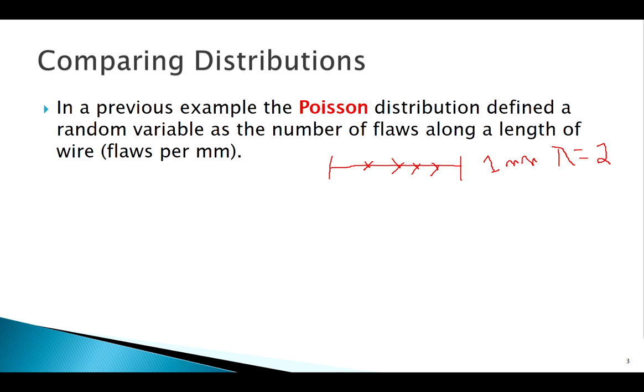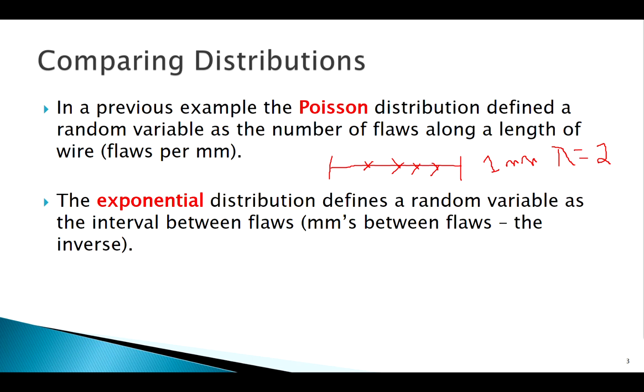So the Poisson - we have a fixed interval, we know how many events we expect to occur on that fixed interval, a Poisson random variable counts how many events actually occur. The exponential is based on a similar idea - often it's phrased as it's based on a Poisson process - but it's almost the opposite or the inverse of a Poisson distribution.